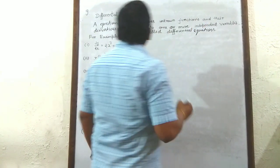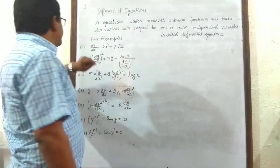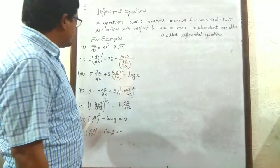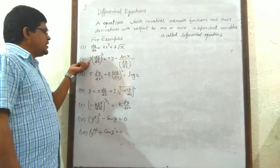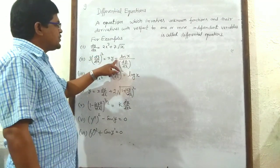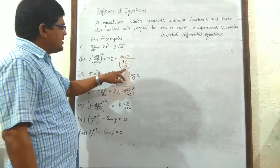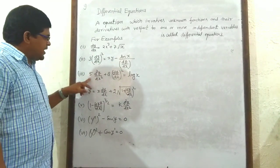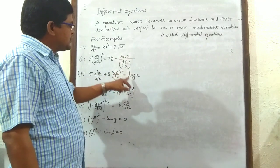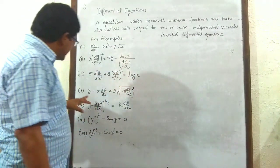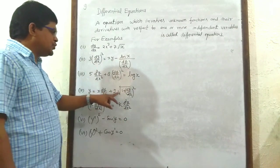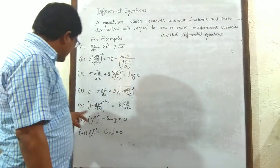For example: dy/dx = 2x³ + 7√x. Second example: 3(dy/dx)² = xy − sin(x)/(dy/dx). Third example: d²y/dx² + 8(dy/dx)² = log x. Fourth: y = x(dy/dx) + 2√(1 + (dy/dx)²). These are examples of differential equations.